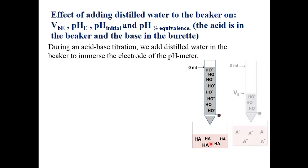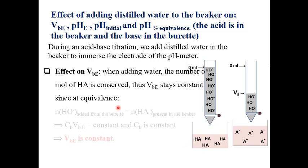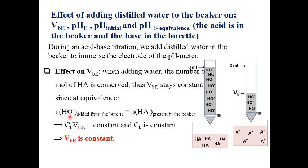At equivalence, there is no more acid in the beaker — only the conjugate base remains. The effect of adding water on VB equivalence: when adding water, the number of moles of HA is conserved. So the volume VB equivalence stays constant, because the number of moles of OH⁻ required to react with HA will be the same regardless of the volume in which HA is found.